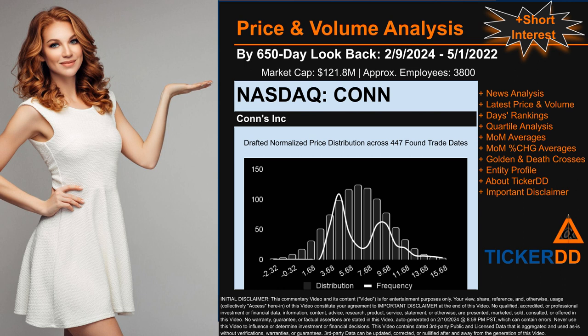The chart shown on this page is our initial attempt at studying the price for Conn after dynamically normalizing price distribution across those discovered trade dates. The bar chart is the generated distribution, and the overlaid line graph — if it is generated — is the frequency of the prices on the x-axis. We will enhance this look-through as our model progresses in the next iteration.